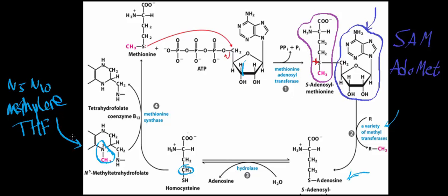N5-methyltetrahydrofolate is synthesized from N5,N10-methylenetetrahydrofolate, which is converted irreversibly to N5-methyltetrahydrofolate by N5,N10-methylenetetrahydrofolate reductase — an NADPH-dependent reductase. You would think the methyl transfer would be a simple SN2 between homocysteine and N5-methyltetrahydrofolate, but the mechanism is much more convoluted. The methyl group is first transferred to vitamin B12, synthesizing methylcobalamin, and then methylcobalamin transfers the methyl group to homocysteine, making methionine.